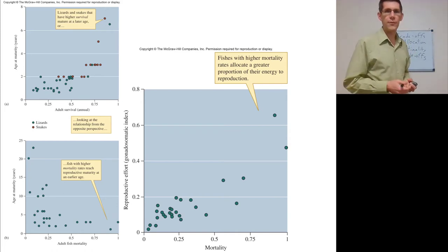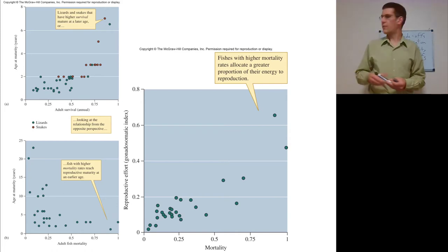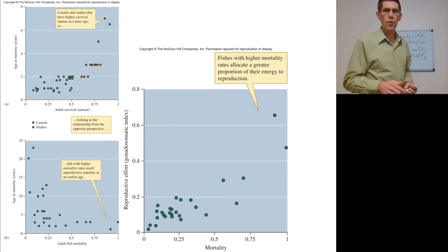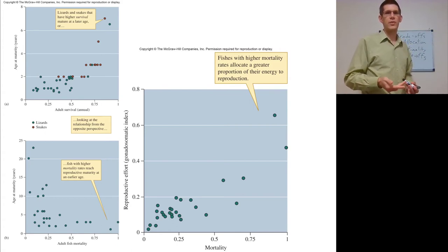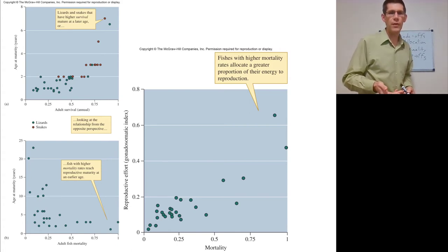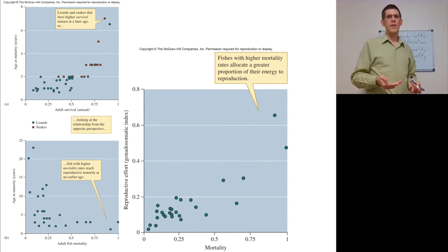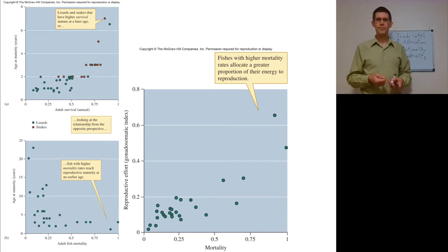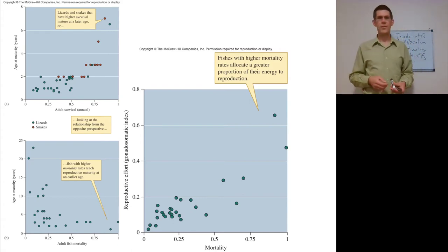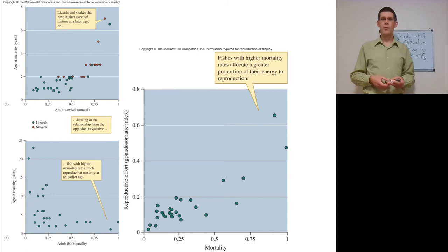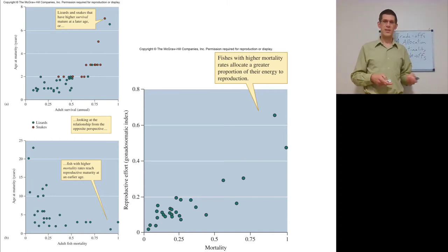With different fish, lizards, and snakes: those with higher adult survival tend to mature at a later age, while fish with higher mortality rates reach reproductive maturity earlier. Fish with higher mortality rates also allocate a greater proportion of energy to reproduction — live fast, die young, hashtag YOLO.